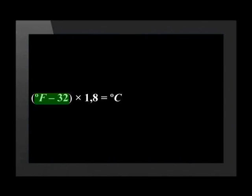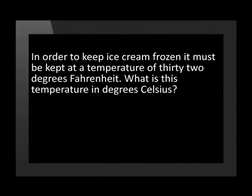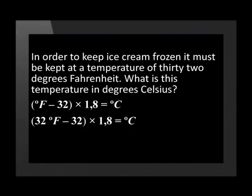You could also be asked to convert degrees Fahrenheit to degrees Celsius. This formula can be used: 32 is subtracted from the degrees Fahrenheit and the answer is multiplied by 1,8. This will give the converted answer in Celsius. In order to keep ice cream frozen, it must be kept at a temperature of 32 degrees Fahrenheit. What is this temperature in degrees Celsius? To answer this question, substitute the degrees Fahrenheit symbol with the degrees given in the question. The formula will now be: open bracket 32 degrees Fahrenheit minus 32 close bracket, times 1,8.